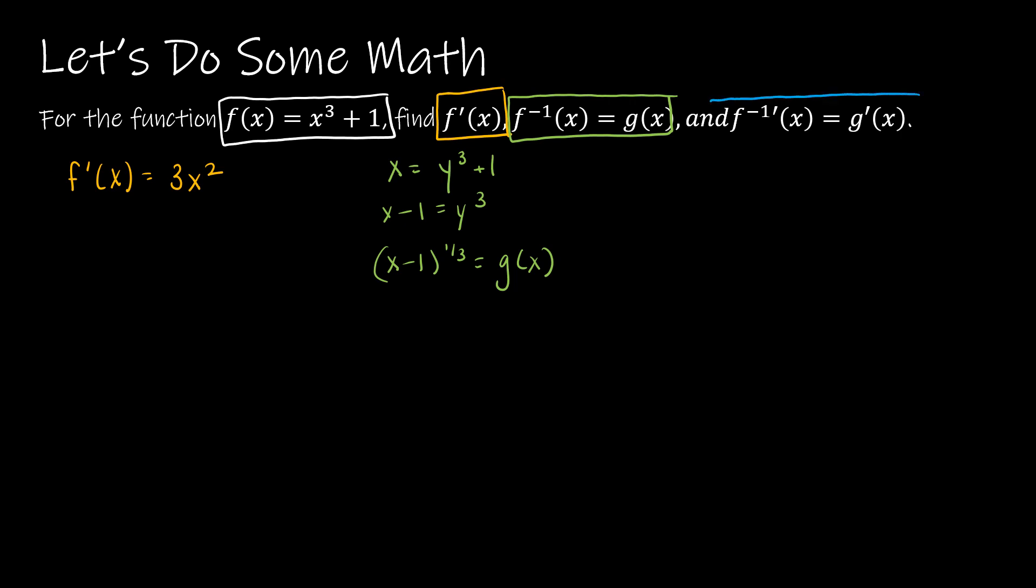Now I want to find g prime of x, which is actually the derivative of the inverse function. So g prime of x is the derivative of g(x), which is 1/3 x minus 1 to the negative 2/3, which would give me that g prime of x is equal to 1 over 3(x minus 1) to the 2/3. So I've done the math, now what? Well, let's take a look at what the relationship is going to be between these four functions.